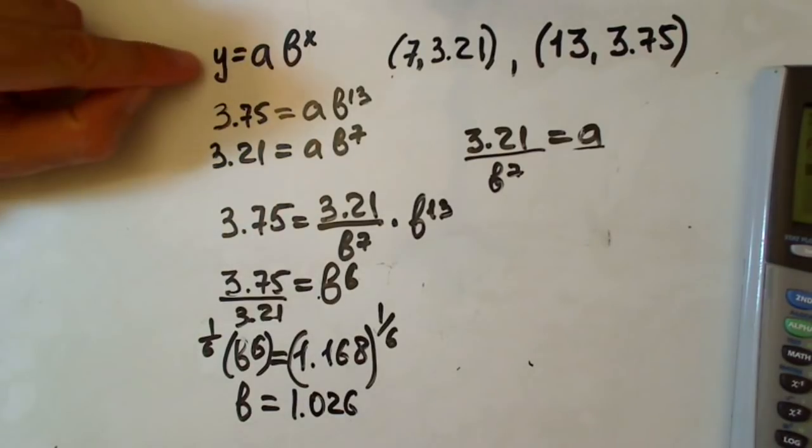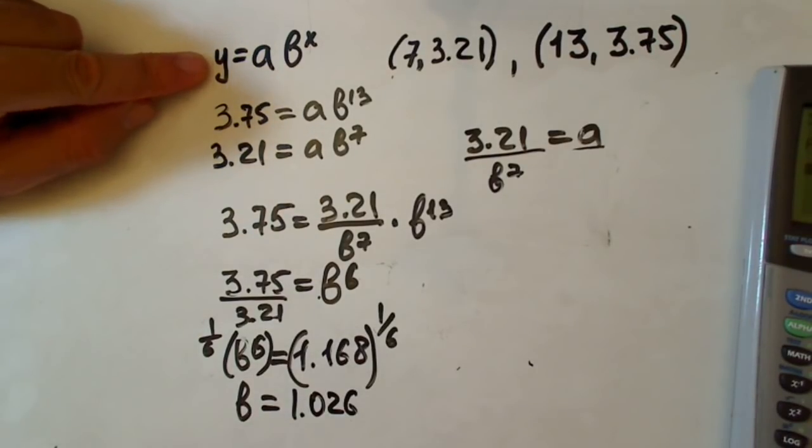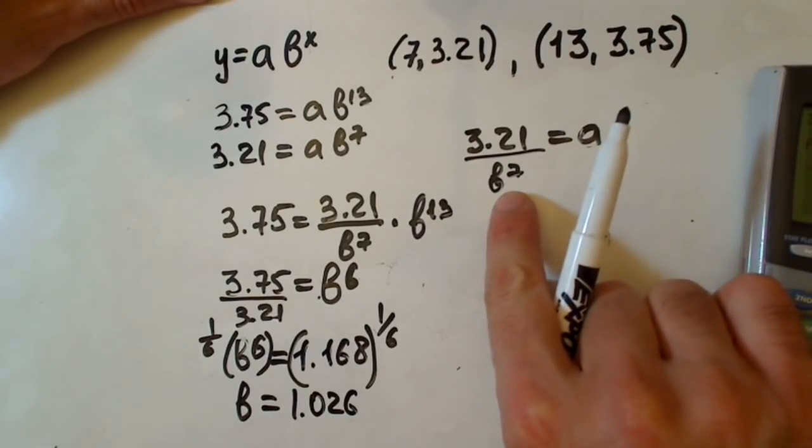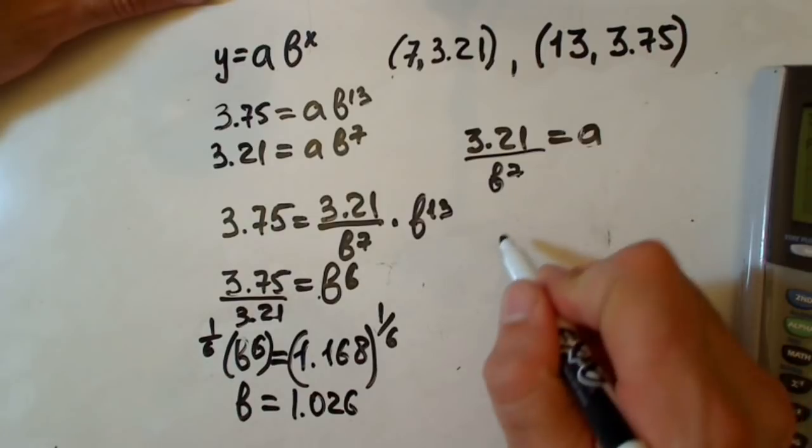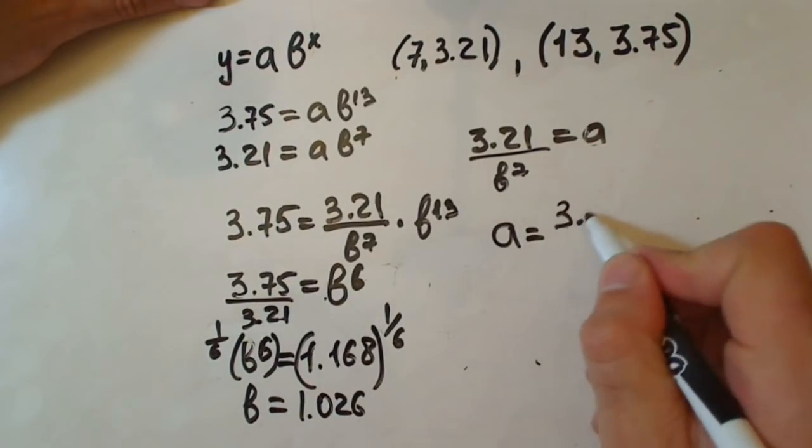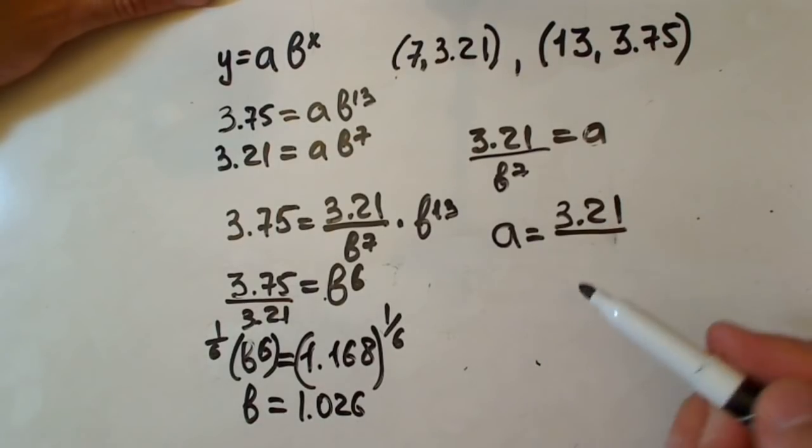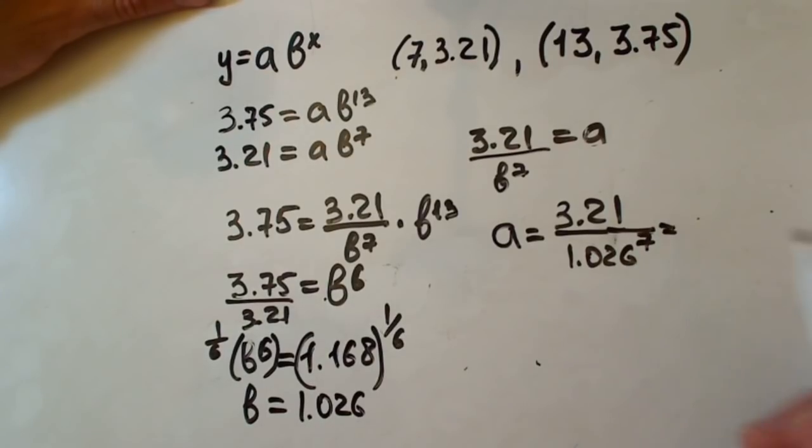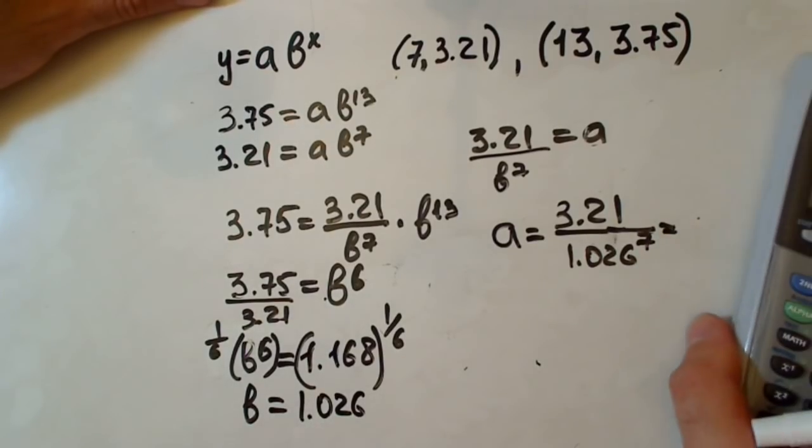For our function we need also the a value. We found it before in terms of b. Let's plug in our b in this equation. We have a equals 3.21 over b to the seventh, and b is 1.026 to the seventh power.